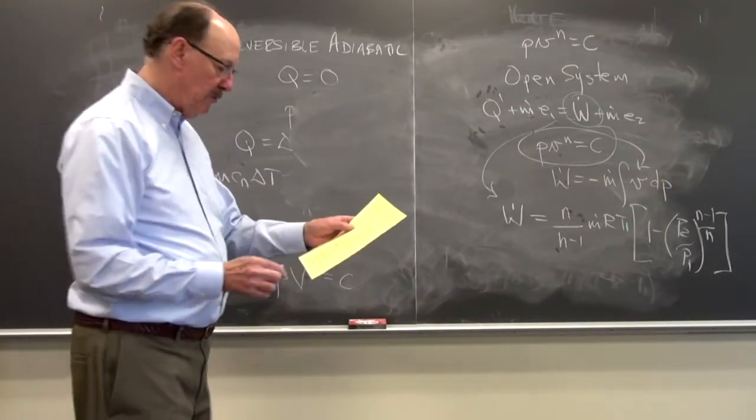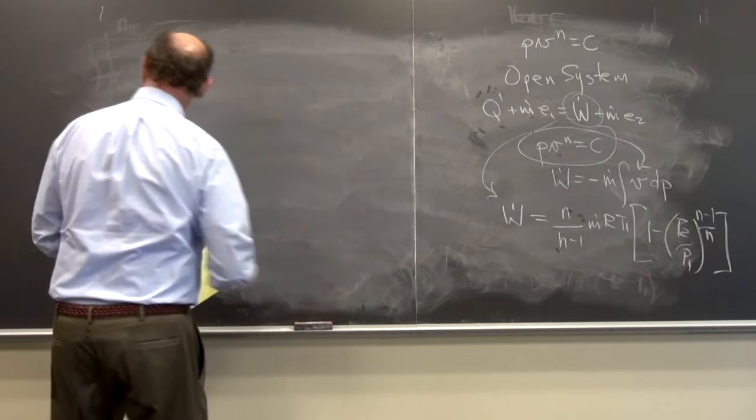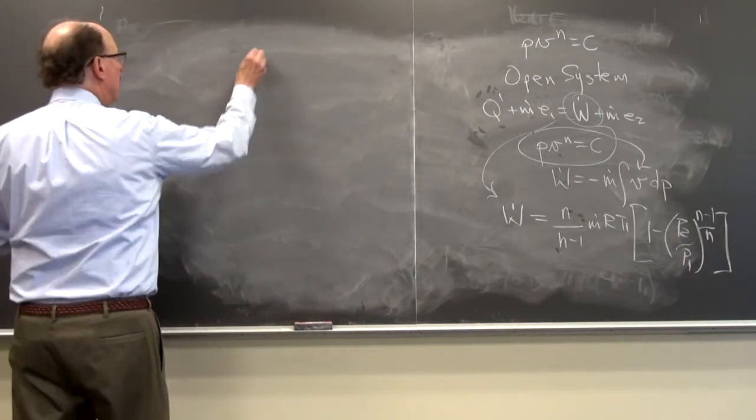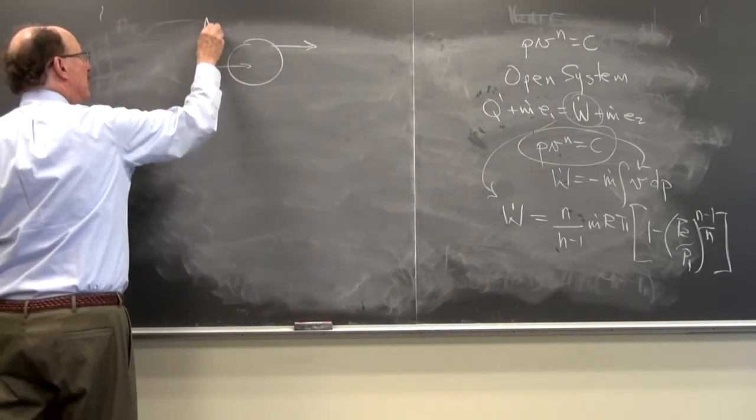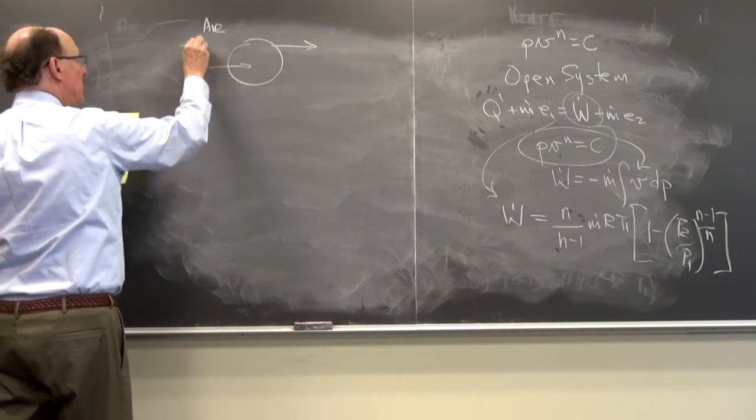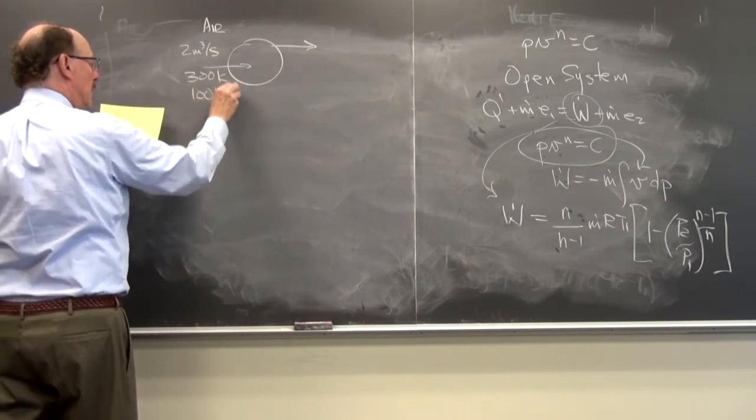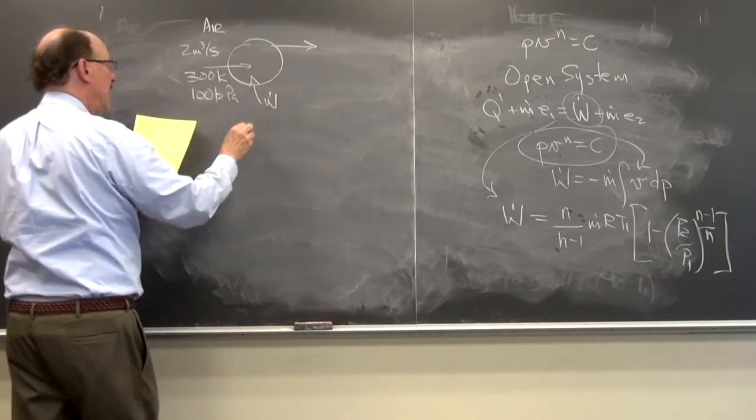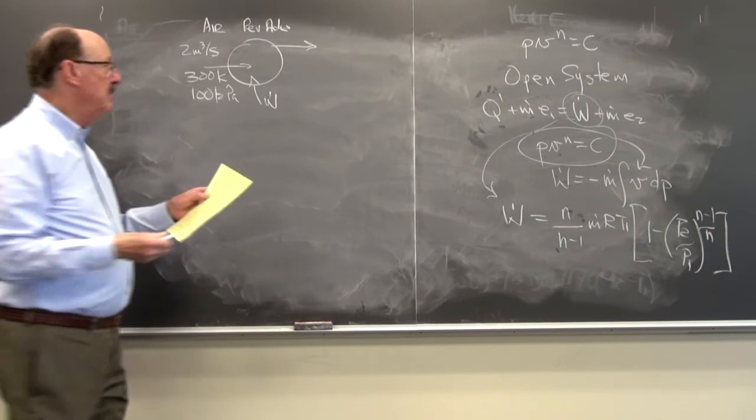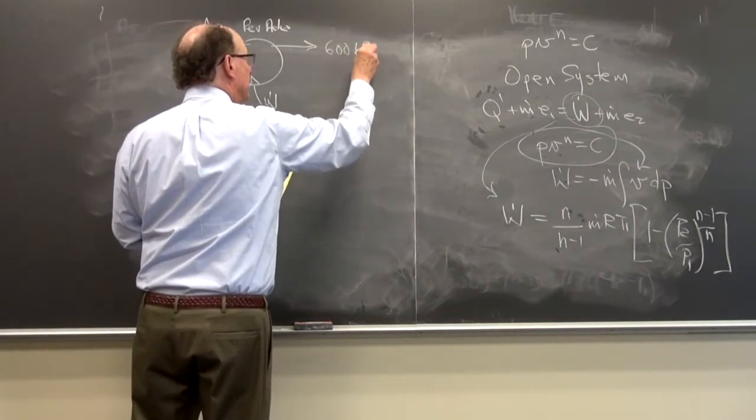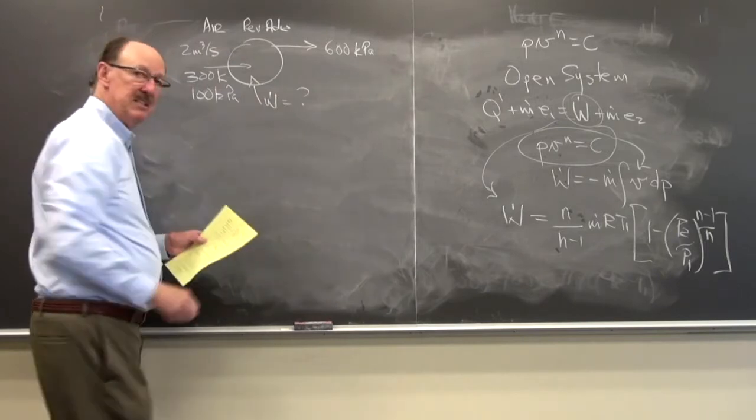Let's look at an example of a reversible adiabatic process for an open system. So we're going to have air, we're going to have a compressor. It receives two cubic meters per second of air at 300 K, 100 KPA. We're going to compress it, so we'll have power going in. We're going to be reversible adiabatic, so in this case there won't be any heat loss, and it leaves at 600 KPA. And what we want to do is find the power that's required.